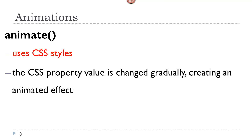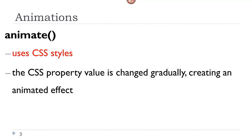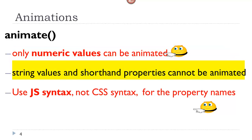The animate method is based on CSS styles, where the property value is gradually changed, creating an animated effect. You can only animate numeric values, so any CSS property that takes a numeric value can be animated. You cannot animate a string value, such as a color, or a shorthand property.